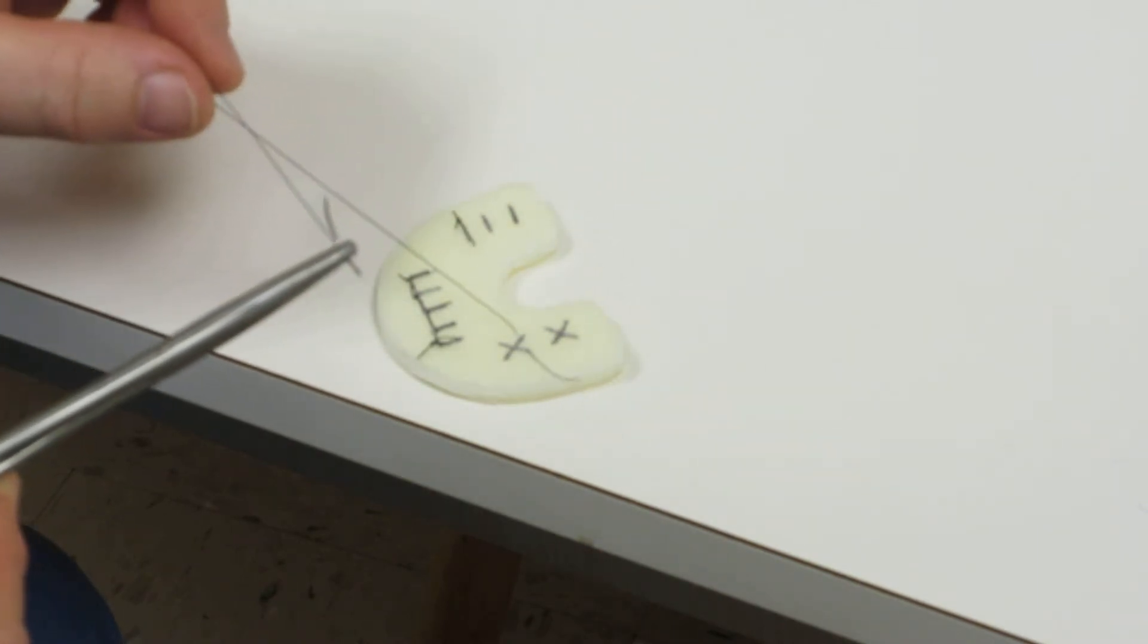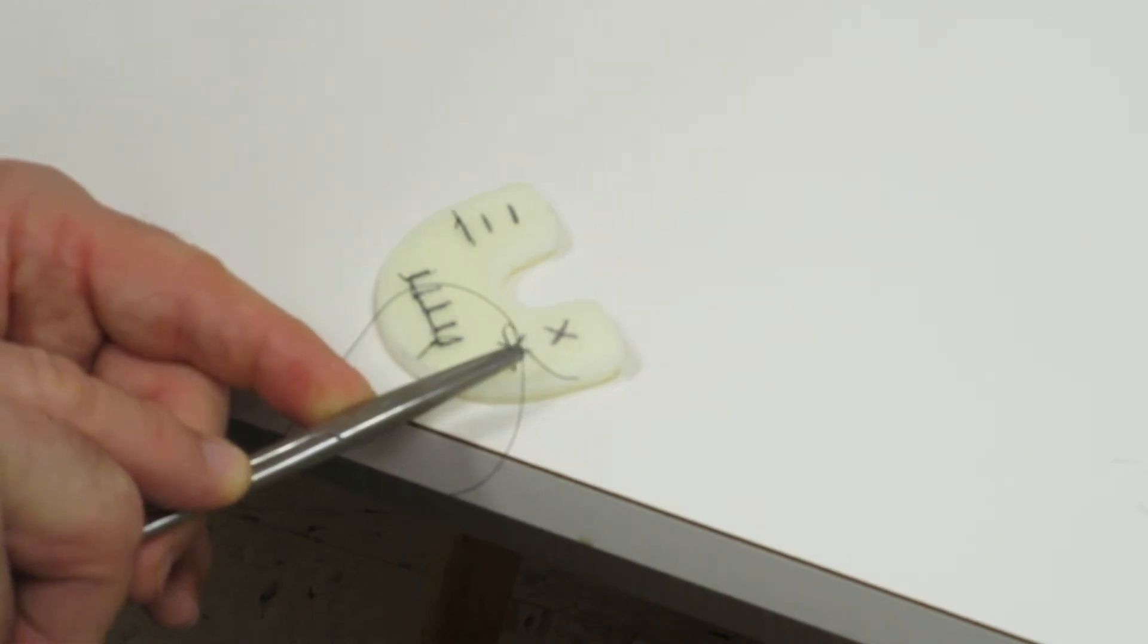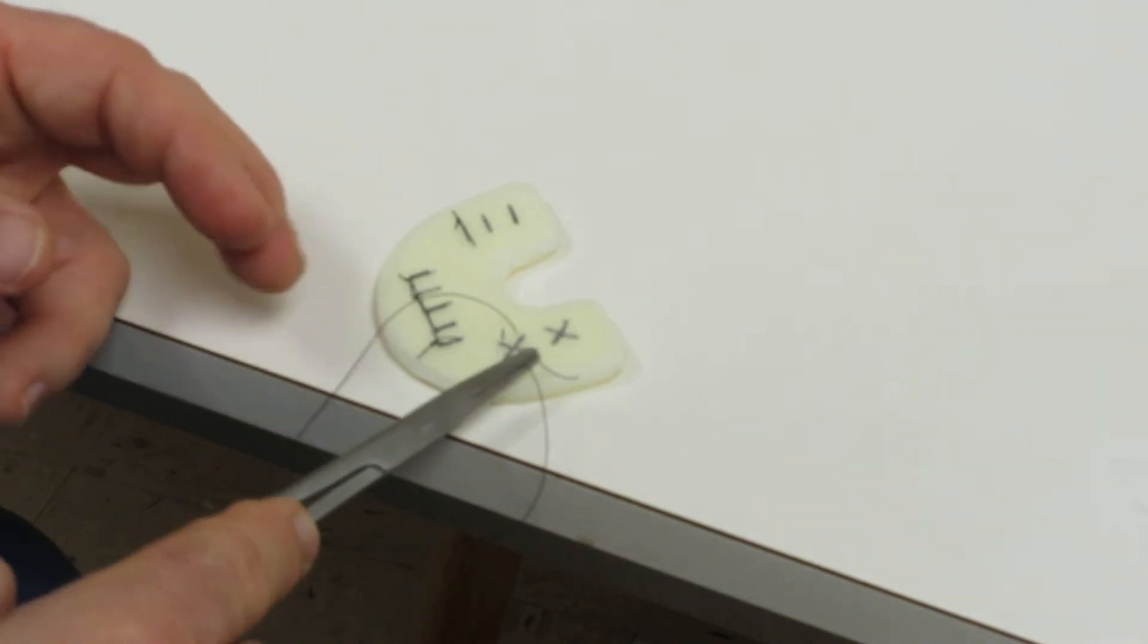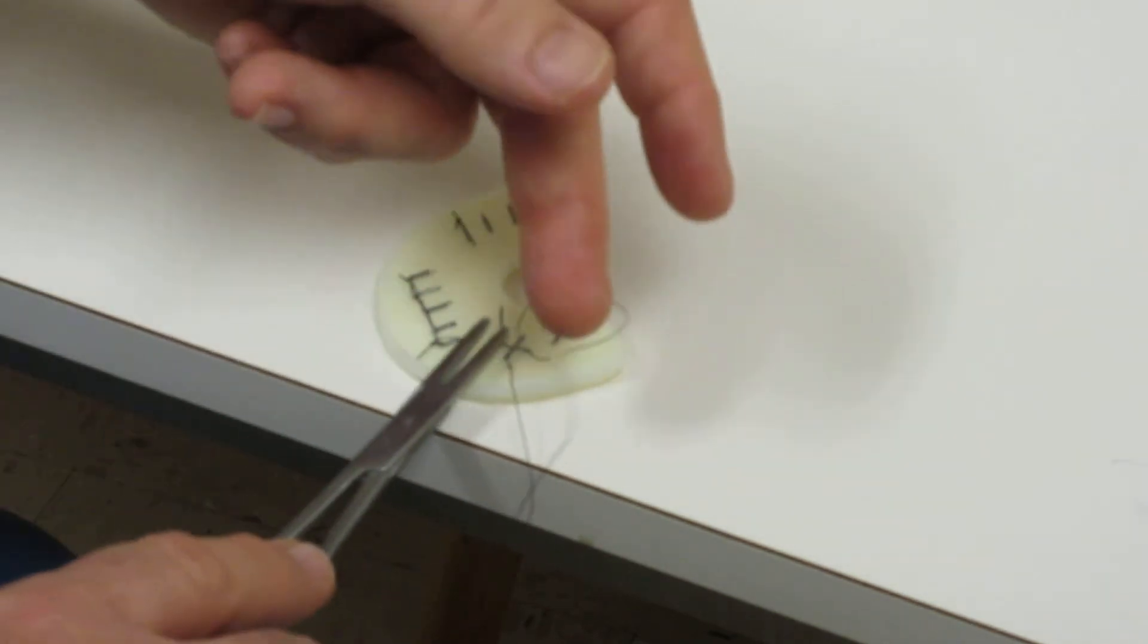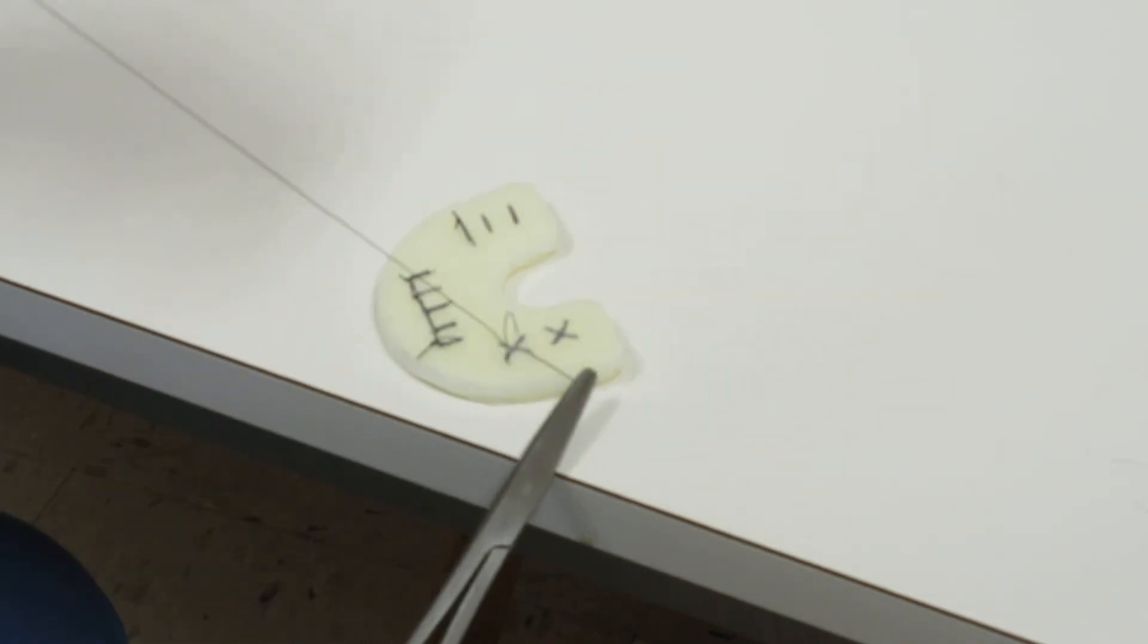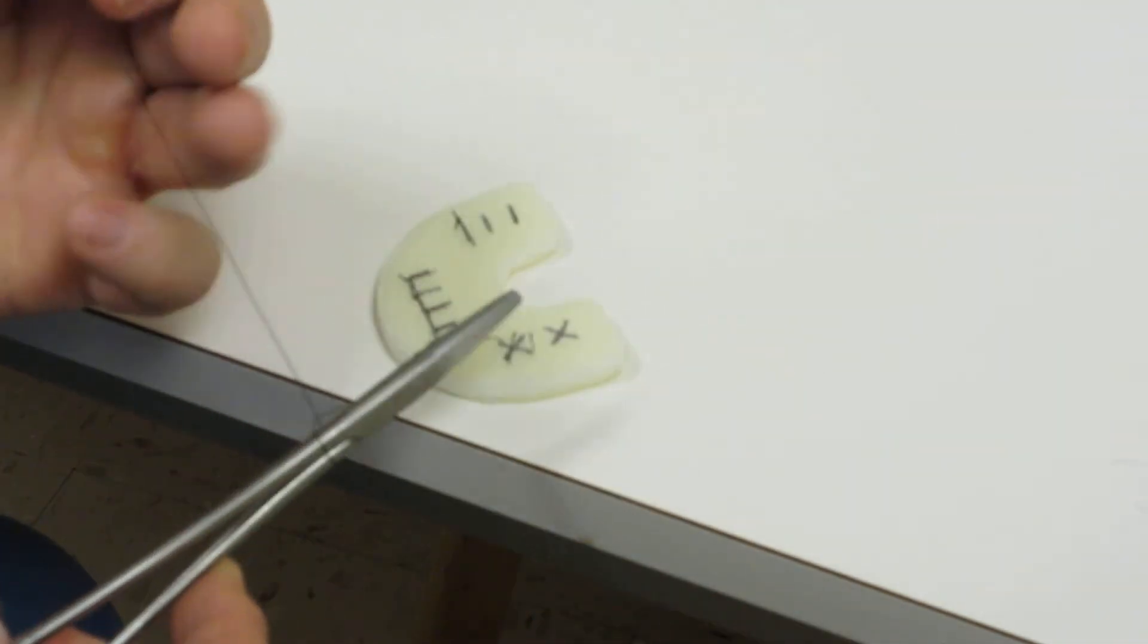Don't pull your suture through and now go to the mesial portion. Go back through, and then see there's your figure eight.